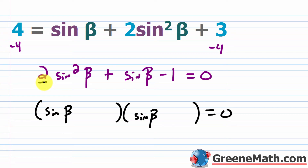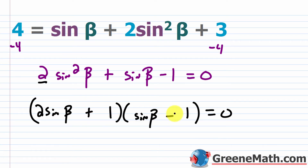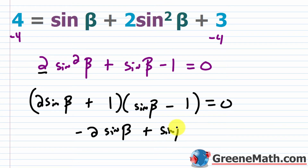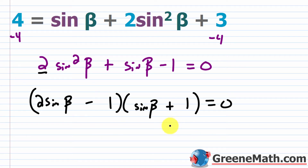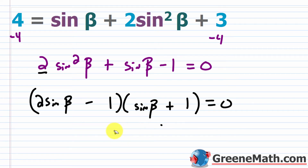Factoring: place sine of beta in each factor. With 2 as a prime coefficient and final term negative 1, we need factors that give 2 sine² beta and a positive middle term. Working out the signs: (2 sine beta minus 1)(sine beta + 1) = 0. Check: outer term is 2 sine beta, inner is negative sine beta, combined gives plus sine beta; and negative 1 times 1 is negative 1. Correct.